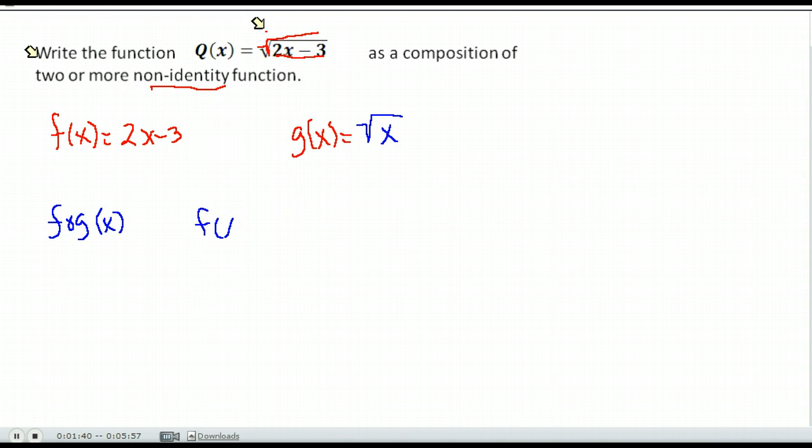So we can say that q of x is the composition f of g of x where f of x is 2x minus 3 and g of x is the square root of x. I'm just rewriting this because that was a little sloppy. Notice if we did that composition, whoops, excuse me, I put that backwards.